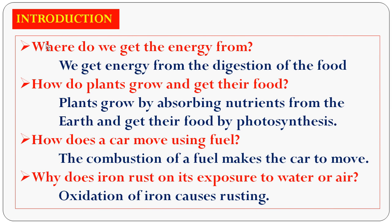Introduction to chemical reactions. Where do we get energy from? We get energy from the digestion of food. How do plants grow and get their food? Plants grow by absorbing nutrients from the earth and get their food by photosynthesis — which takes place in the presence of sunlight and chlorophyll. How does a car move with fuel? The combustion of a fuel makes the car move. Why does iron rust on its exposure to water or air? When iron is exposed to air or water, it forms rust. Rust is brown hydrated ferric oxide — it is the oxidation of iron that causes rusting.